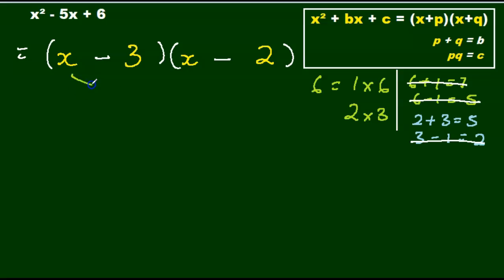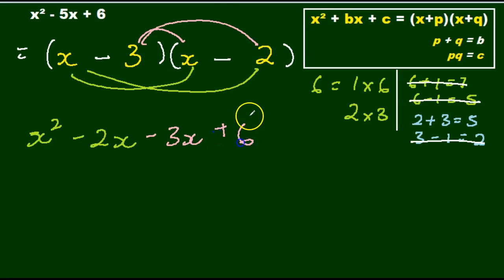We do our FOIL to check back. x times x gives me x squared. x times negative 2 gives me negative 2x. Negative 3 times x gives me negative 3x. Negative 3 times negative 2 gives me a positive 6. Simplify, I get x squared minus 5x plus 6. So this one checks out.